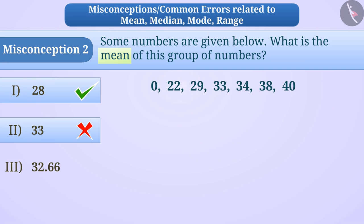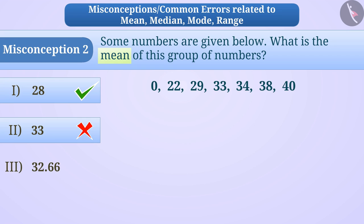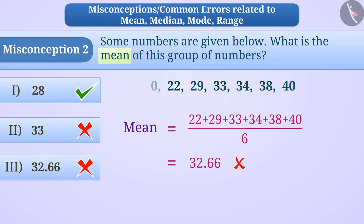Keep in mind that when given numbers are arranged in ascending or descending order, then the number in the middle is called median. Here, median is 33. While calculating mean, some children ignore observation 0. Like here, they think that they only have to get the mean of these 6 observations and they ignore 0. So they divide the sum of these 6 observations by 6, which gives them the mean 32.66, which will be a wrong answer. Hence, option 3 will be the wrong answer.